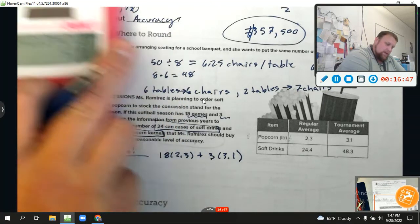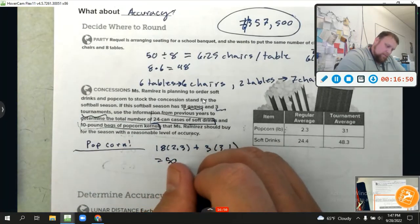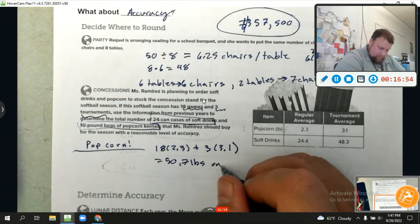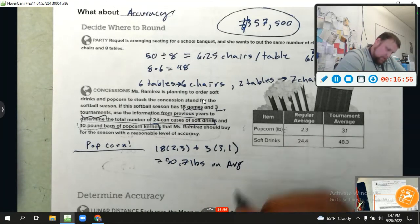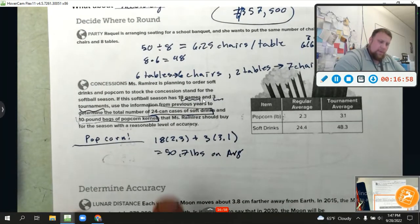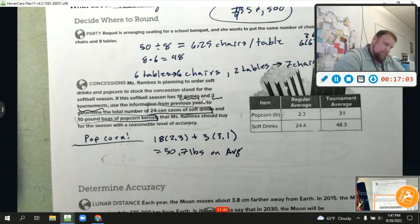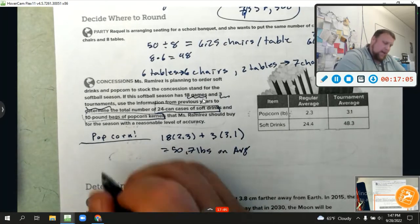Now, if there are 10 pound bags, how many 10 pound bags will get me up to 50.7? Well, there could be an argument either way on this. I would only buy five bags of popcorn. Why do I say only five? Because five times 10 equals 50, which is a little bit less. But honestly, that .7 in my mind isn't enough to justify. However, if you wanted to make sure you had more than enough, you would buy six bags of popcorn. So it just depends on what side of that coin you land on.